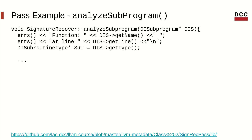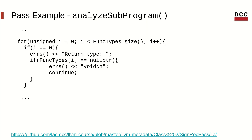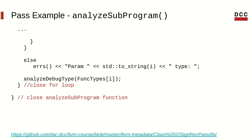Now let's retrieve some information about the subprogram. We can, in a straightforward way, get the name and the declaration line of the program. We also can get the type of the subprogram — this type is a subroutine type. This subroutine type class contains an array with the types that compose the signature of a function. The first position of the array is the return type. If the element in the first position is null, that means the function has no return type — a void function.